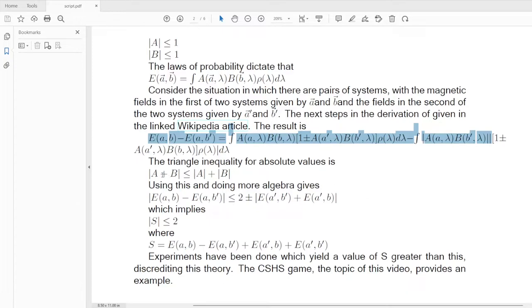Here is the triangle inequality for absolute values. It says that the absolute value of a sum is less than or equal to the sum of the absolute values. Using this and doing more algebra gives this inequality for the difference between the two expectation values. And this implies that the, if we define a variable S as given here, that the magnitude of S is less than or equal to two.